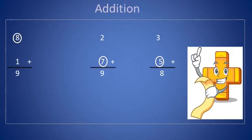We will start with 7 because 7 is the greater number. 7 is greater than 2. We will count on 2 times: 8, 9. So the sum is 9.